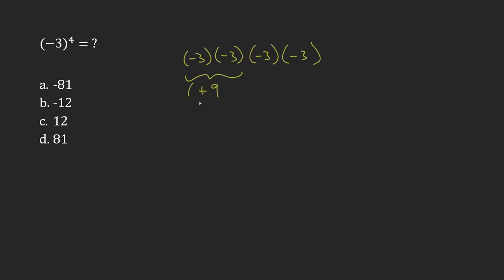So I've got 9 times negative 3 times negative 3. Now I can carry on. I've got positive times a negative, and so that's going to give me a negative result because the signs are different here.